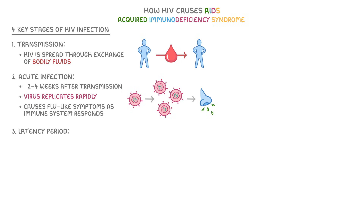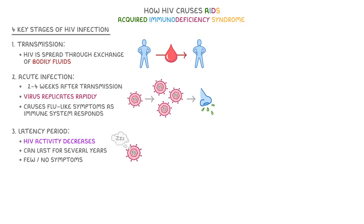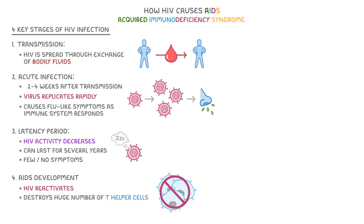After that is the latency period. This is where HIV activity decreases, although the virus is still active at low levels, and this period can last for several years with few or no symptoms. The fourth and final stage is AIDS development. This happens when HIV reactivates and destroys a huge number of T helper cells, leading to immune system failure as AIDS develops.